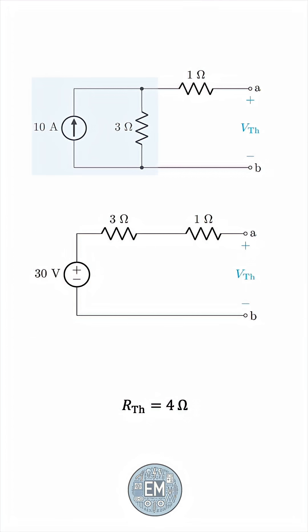And now, no further analysis is needed, because V Thevenin is clearly 30 volts. There is no path for the current to flow, and so no voltage drop across the 3 ohm or 1 ohm resistors. And so the 30 volts of the source will be seen across the terminals A and B.